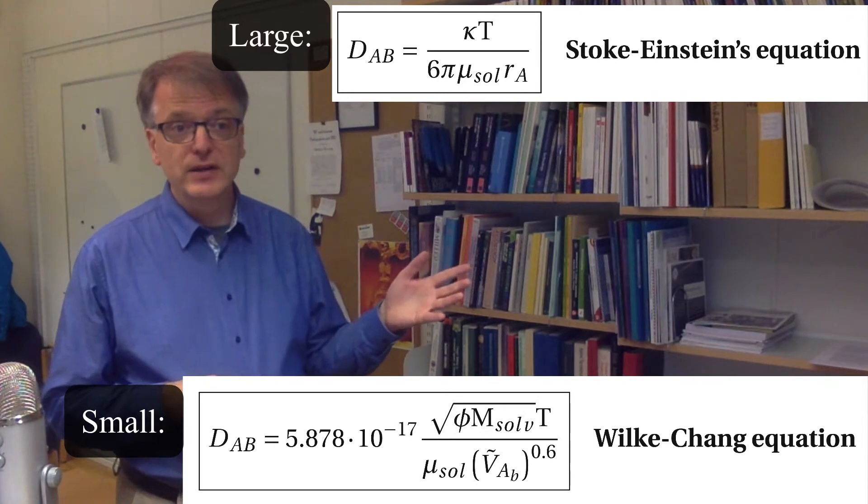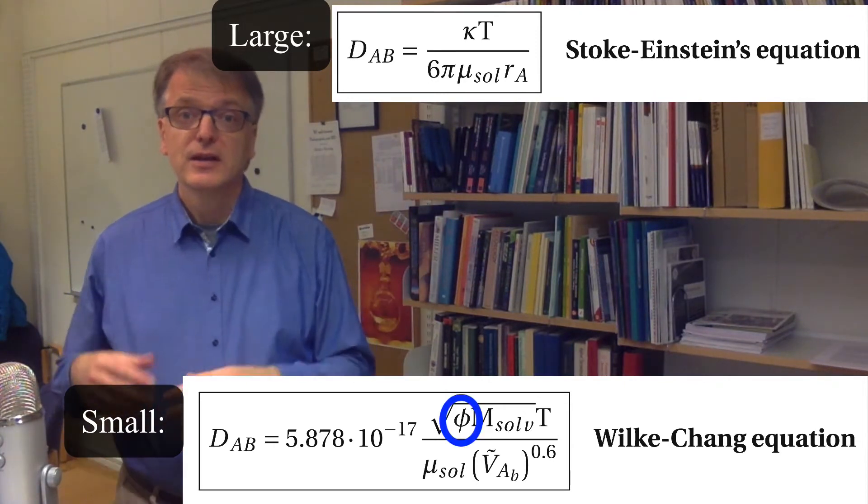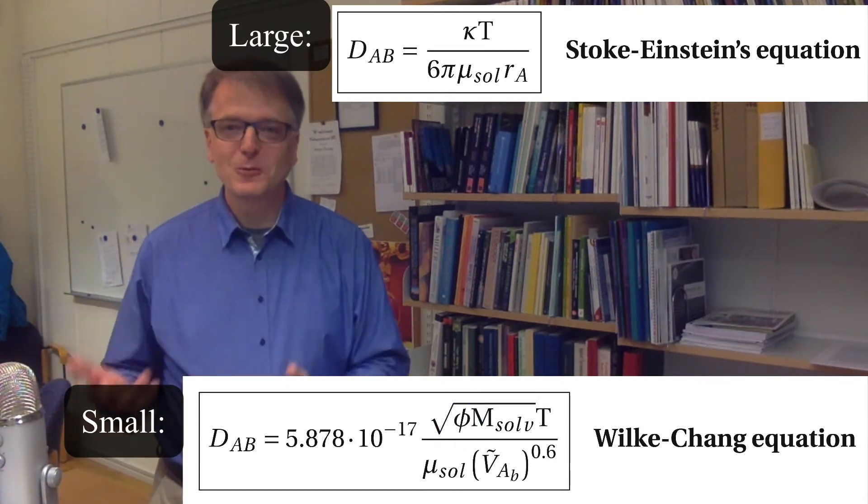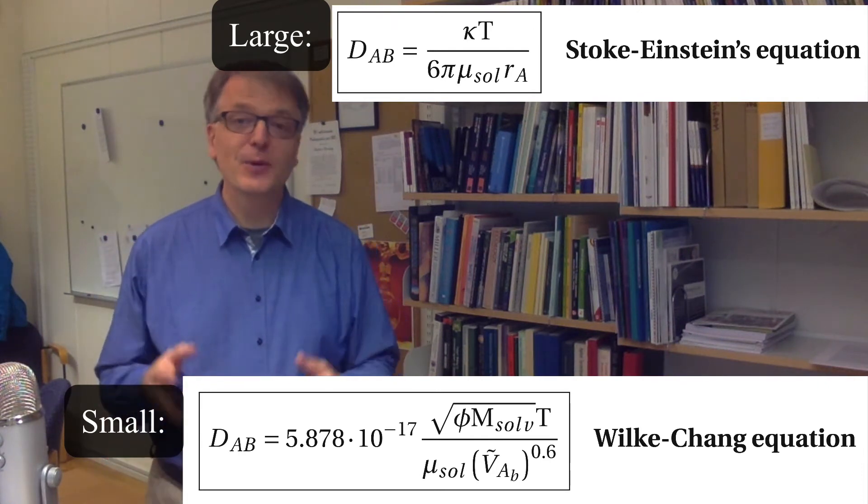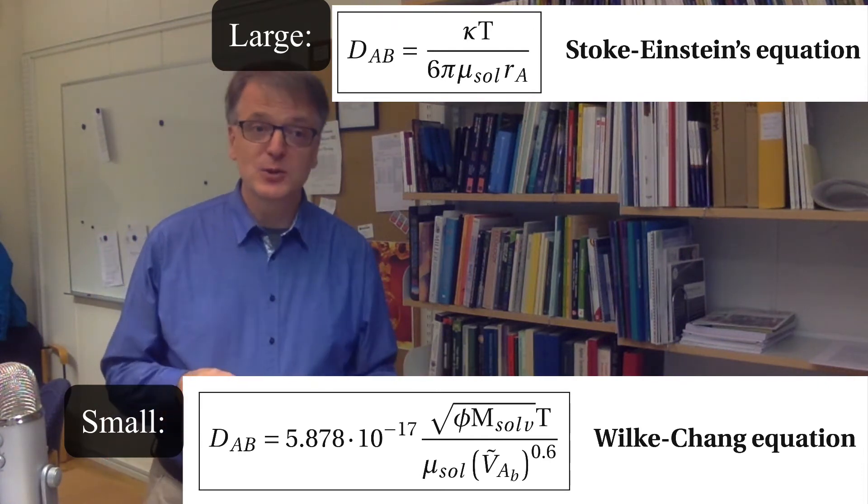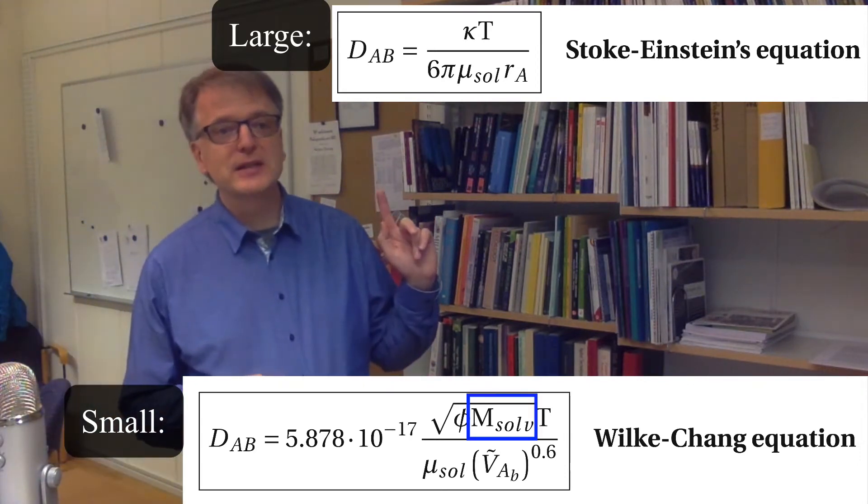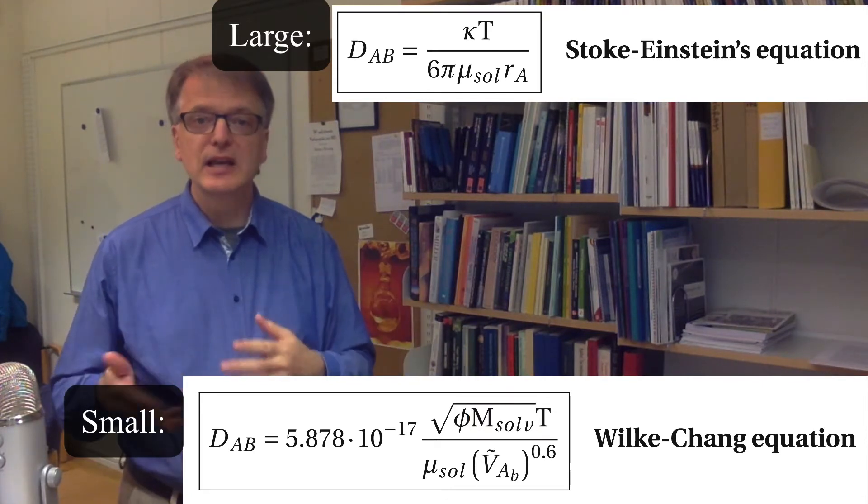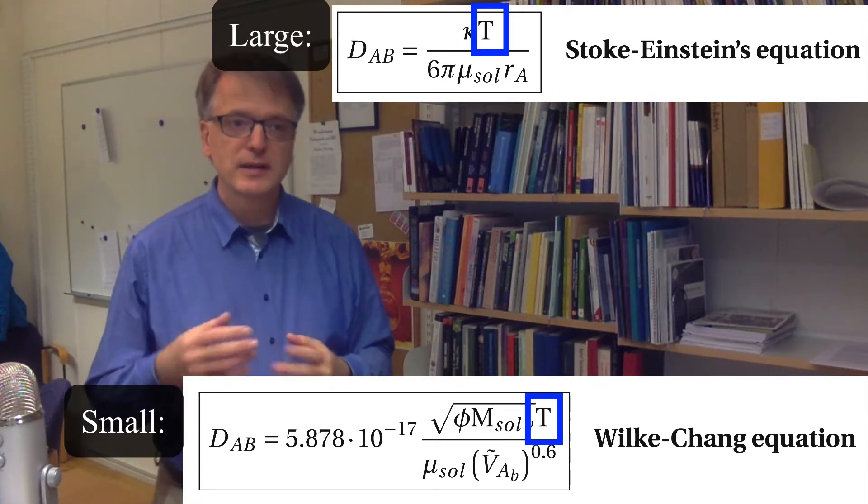So what you have here is phi is an association parameter, and you have to look that up. Interestingly enough, for water, literature sources don't agree what the value should be: 2.6 or 2.26. Then it should be the molecular weight of the solvent in SI units, so kilograms per mole. The temperature, SI units as well, Kelvin.